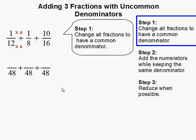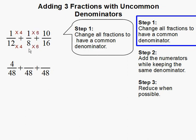The next step is to change each fraction into its higher equivalent form. To do so, we multiply the denominator by a factor to get 48, and we must also multiply the numerator by the same factor. So 12 times 4 is 48, and 1 times 4 is 4. Then we do the same thing for the next fraction.